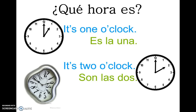¿Qué hora es? To answer the question ¿Qué hora es? on an even hour, you can say es la una — it's one o'clock — or on any other hour, son las dos. The reason why we use 'la' is because we're referring to 'hora.' Es la una hora — it's the one hour.